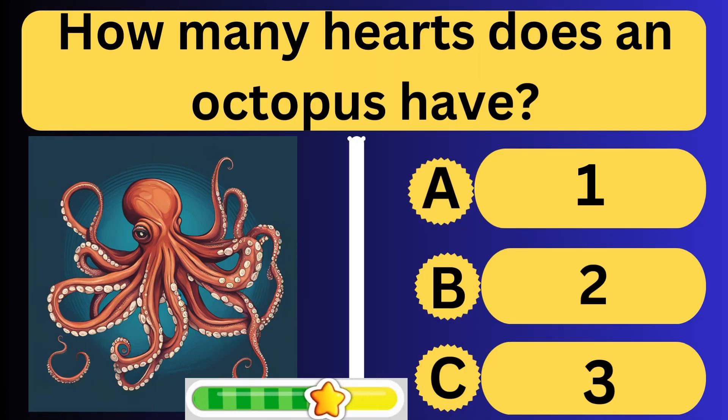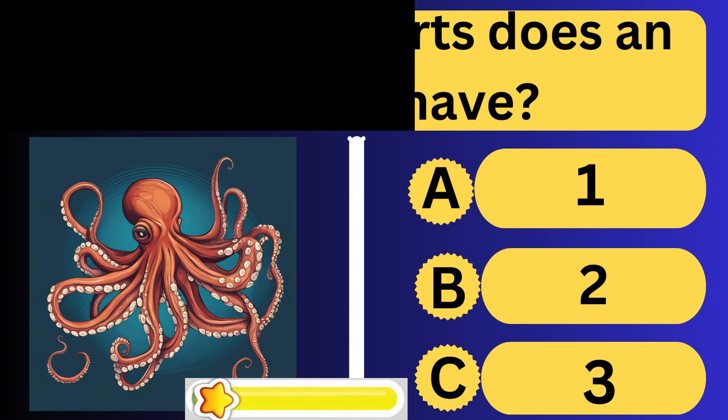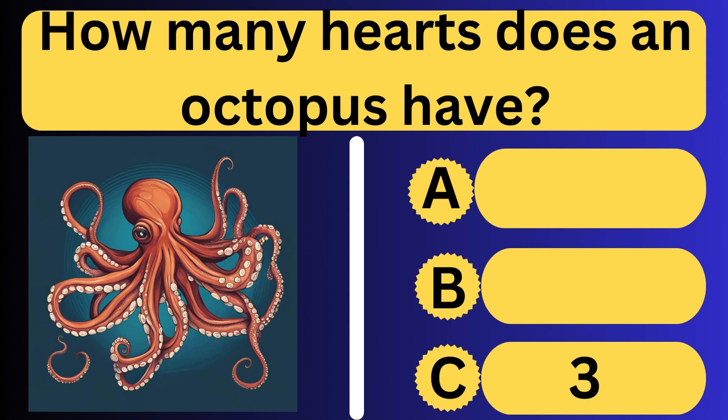How many hearts does an octopus have? Octopus has three hearts in total.